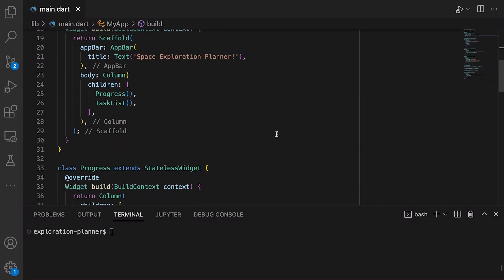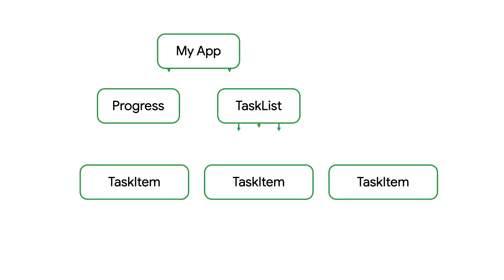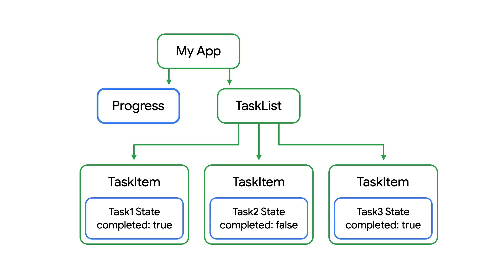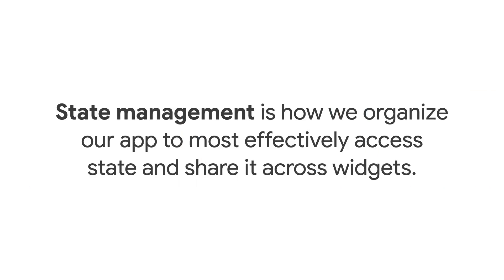Taking a look at the code, we can see why. The progress bar doesn't have any state attached. The state for each checkbox is independently stored within each task item. How does the progress bar know about those task item states? In other words, how does the widget over there get access to the state that's stored over here? The answer is, it doesn't. Yet. And that's where state management comes in.